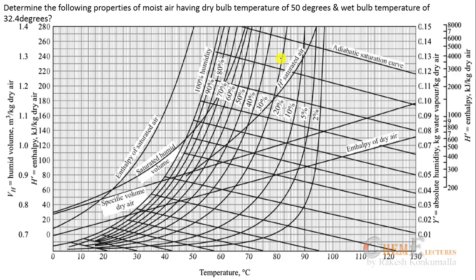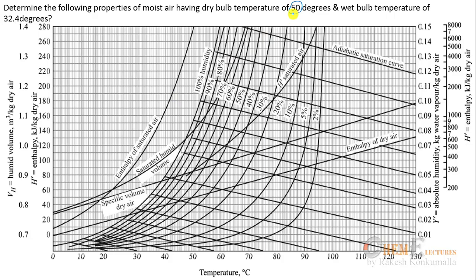This is how a psychrometric chart looks for an air-water system at one atmosphere pressure. When you change the pressure the chart also varies; here we consider only one atmosphere. We know dry bulb temperature of 50°C and wet bulb temperature of 32.4°C.